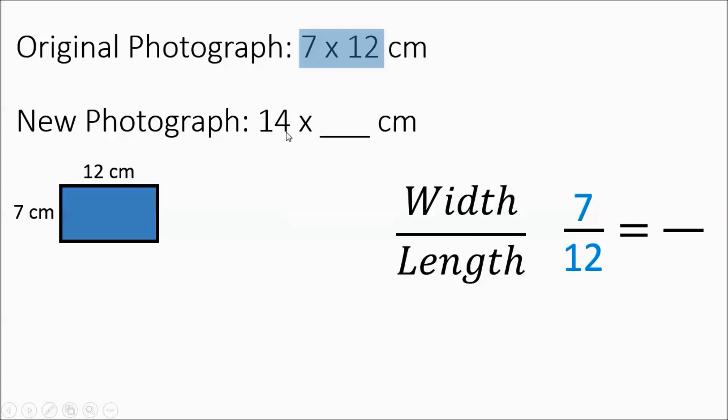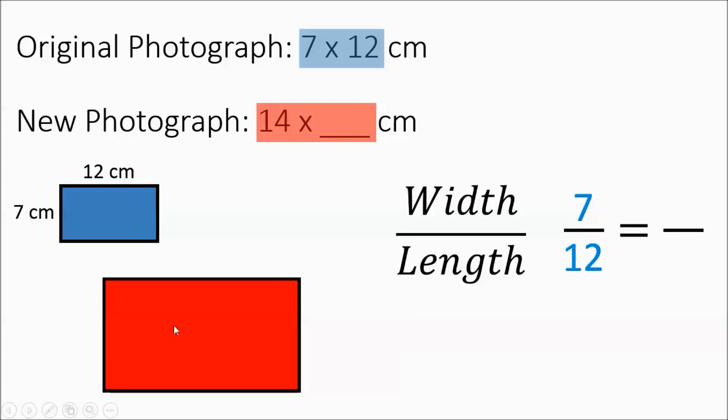Now we're going to set up the second picture. We want it enlarged, it's going to be 14 by something centimeters. I'm going to go ahead and give you the visual here, 14 to something. Now 14 was the first measurement listed, and 7 was the first measurement listed, so that's going to go across from 7. So we have 14 to the mystery number.